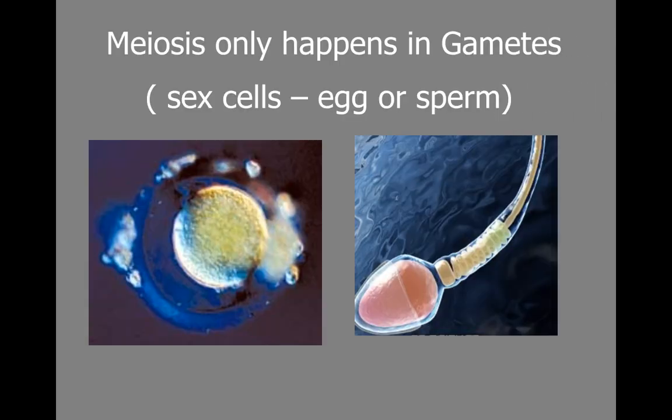Meiosis is only going to happen to produce gametes. So it's not that it's necessarily happening in gametes — it's producing gametes. Here we're talking about sex cells, we're talking about egg cells and sperm cells, and that is for males and females.